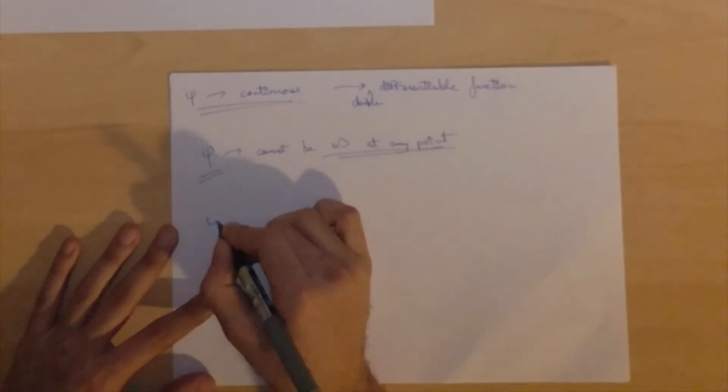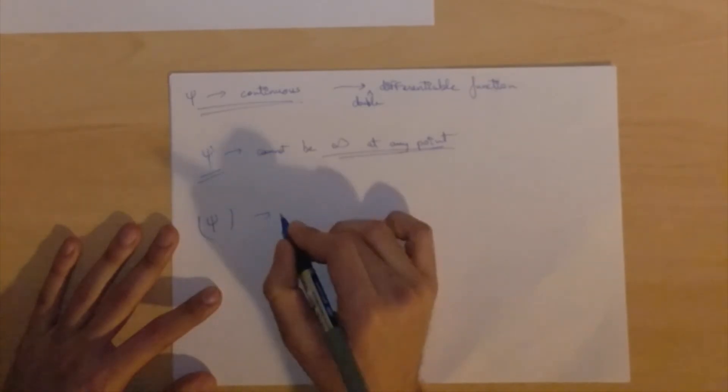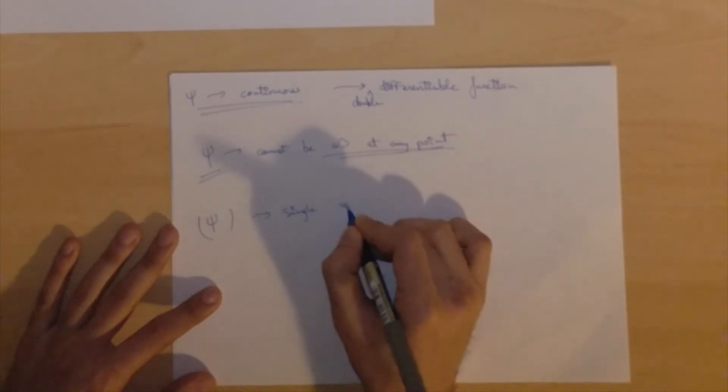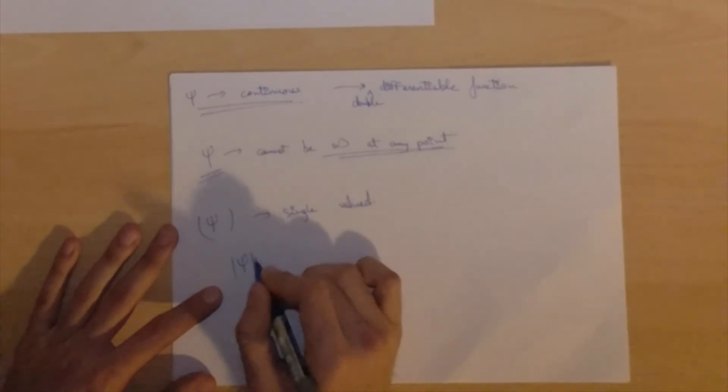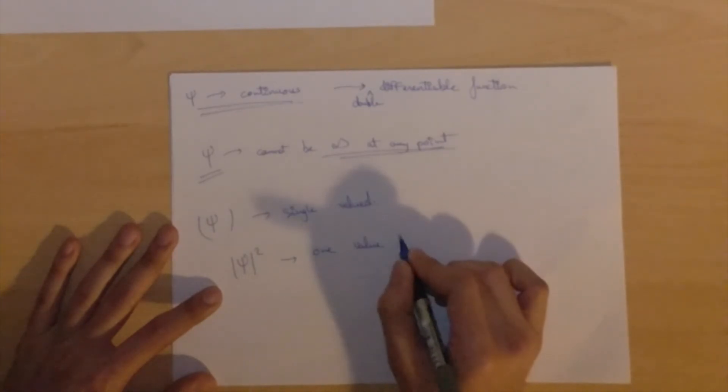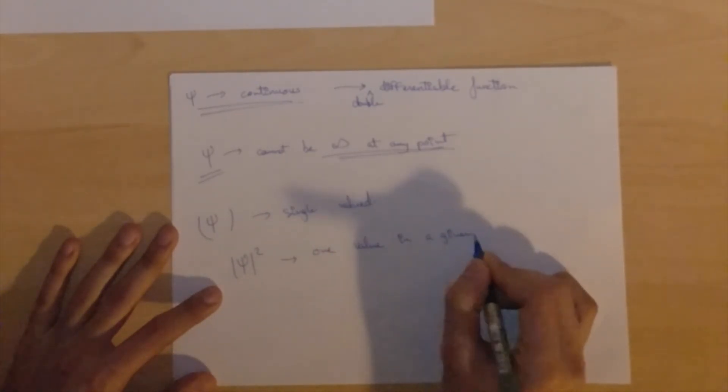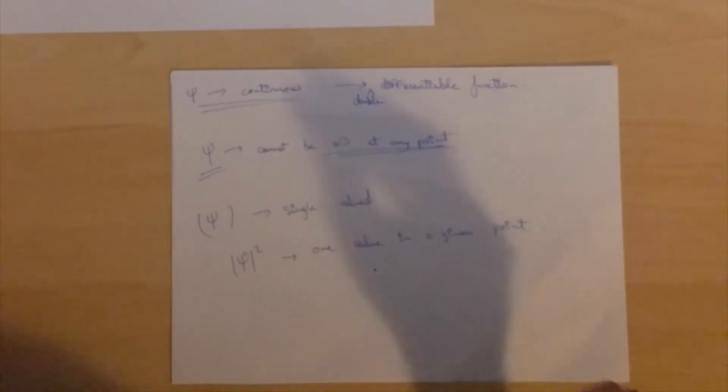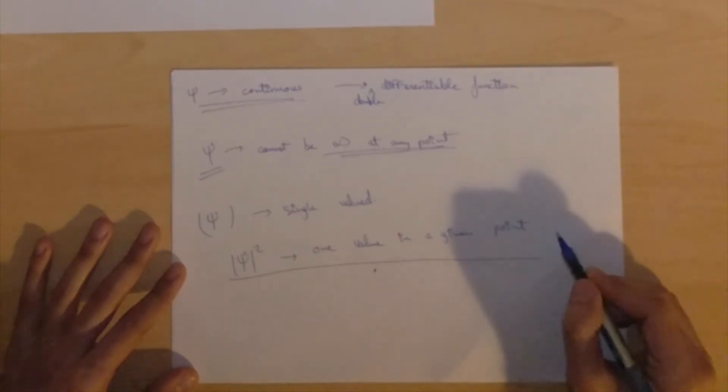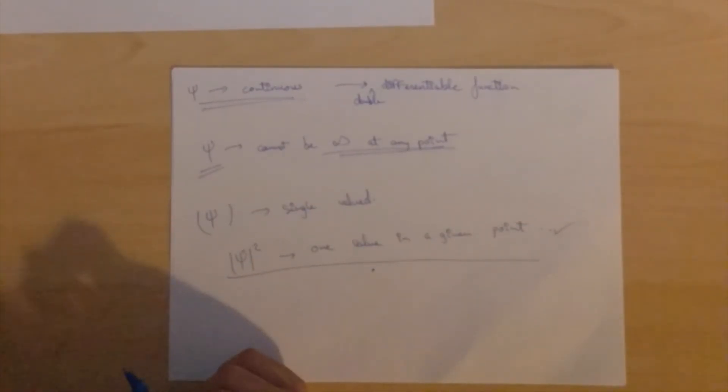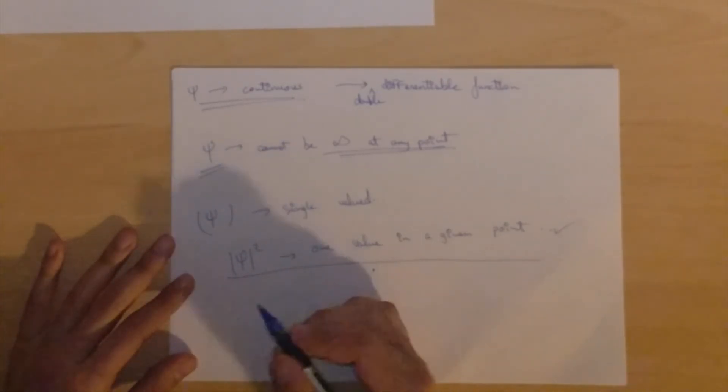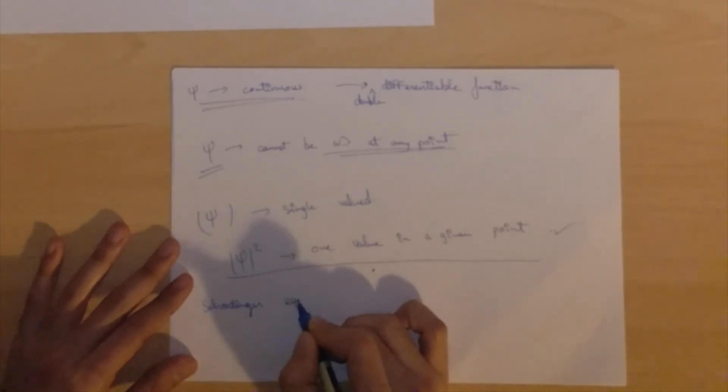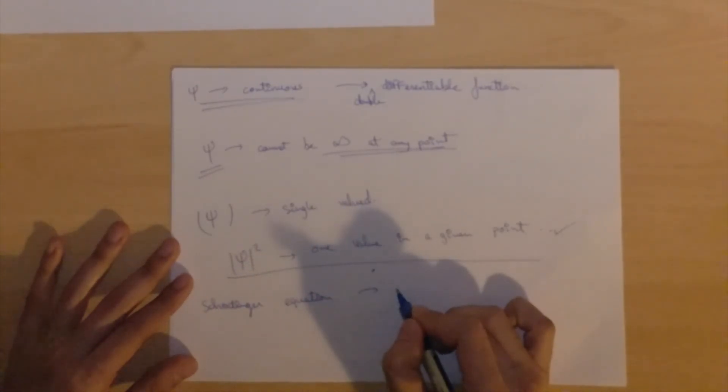The next thing is that psi must be single-valued. This means that psi squared only has one value in a given space, at a given point. So what we're essentially saying is that the particle cannot have two probabilities associated of existing in the same point, which doesn't make any sense. So this is fairly intuitive, as you would expect.